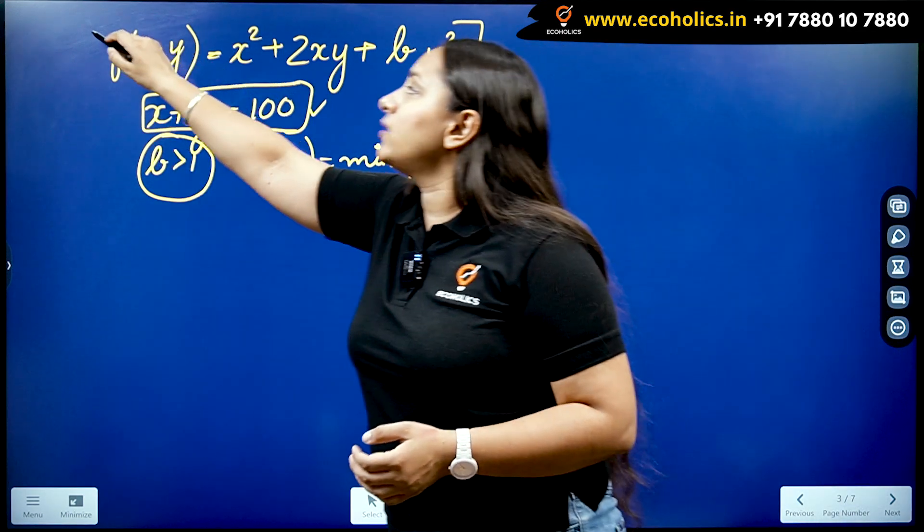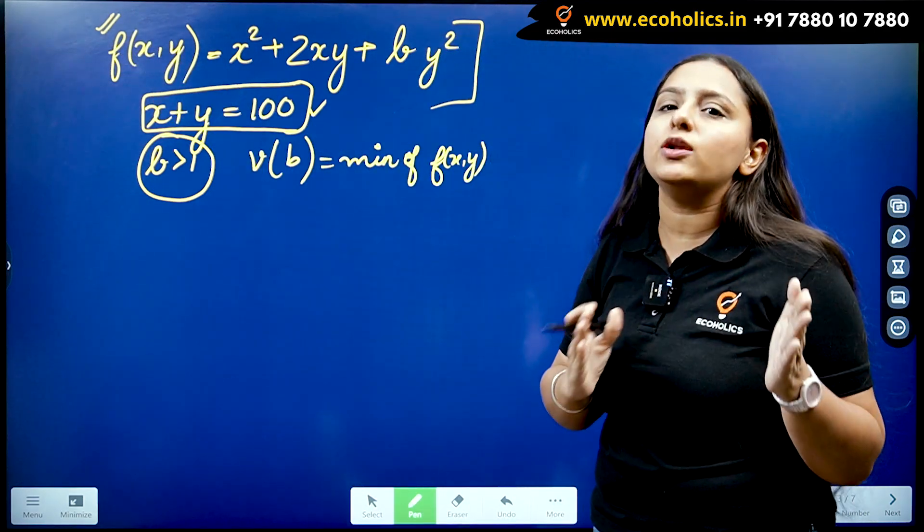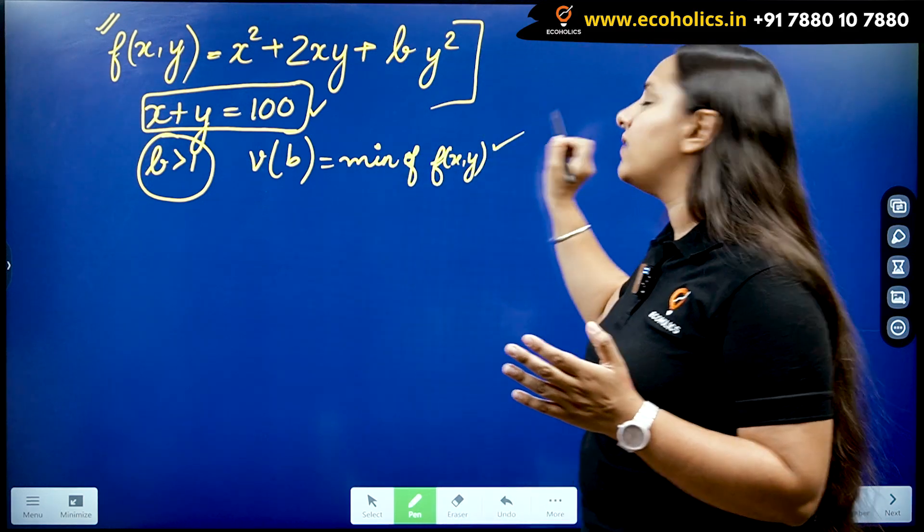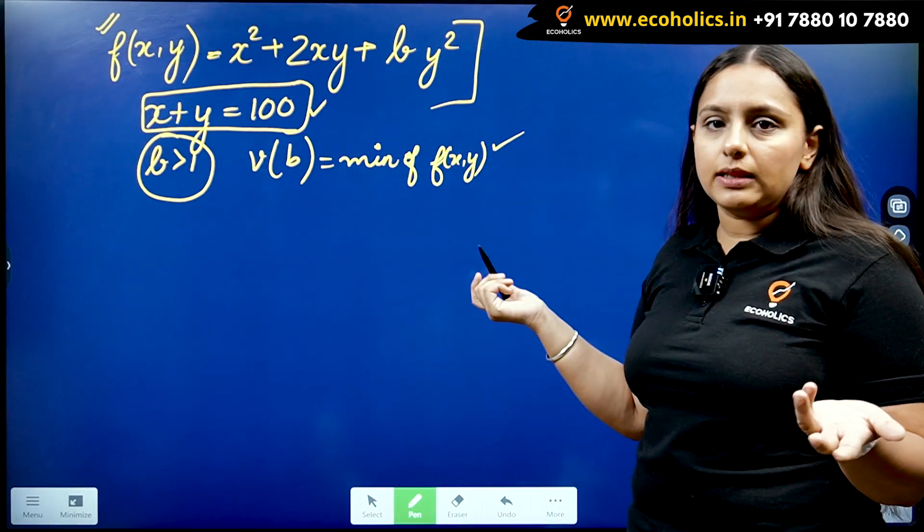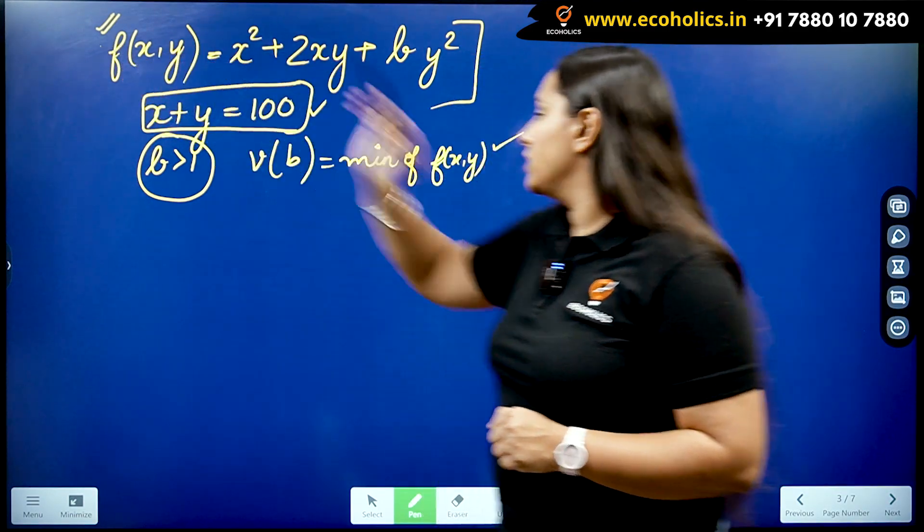What is the use of constraint here? The constraint, if it is given, we have to use it, we cannot move without it. So we are going to substitute our constraint back to this function so I can see what minimum value this can attain. Because as soon as I will get minimum value, I'm going to get the value of v(b) and I will be getting the derivative of v(b).